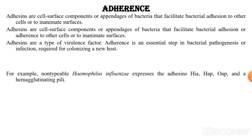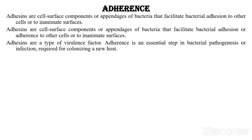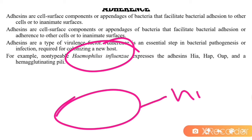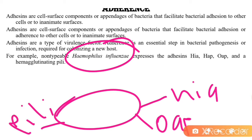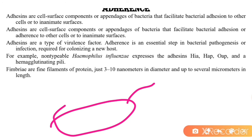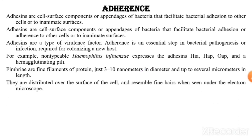For example, non-typeable Haemophilus influenzae expresses the adhesins HIA, HAP, OapA, and haemagglutin pili. Fimbriae are fine filamentous proteins just three to ten nanometers in diameter and up to several micrometers in length. They are distributed over the surface of the cell and resemble fine hairs when seen under the electron microscope.